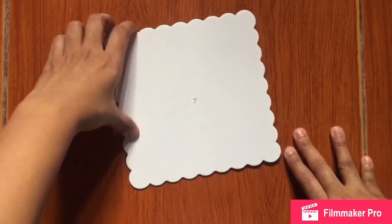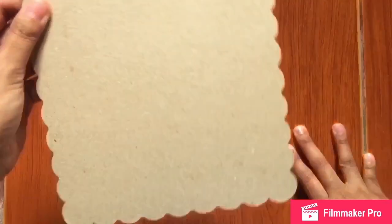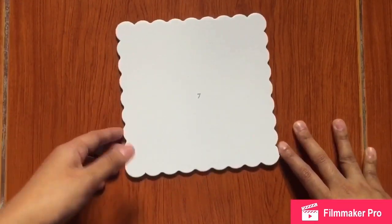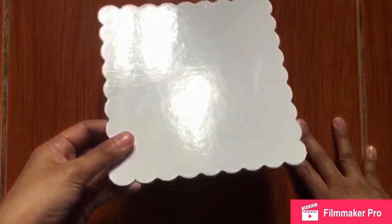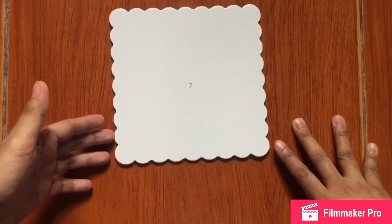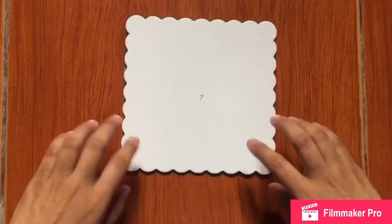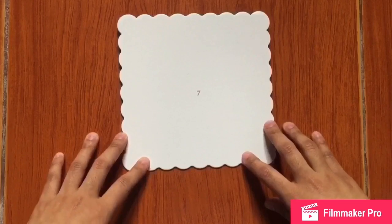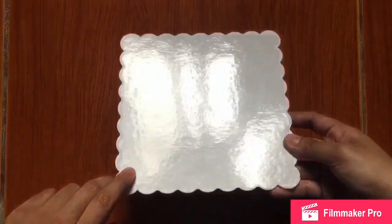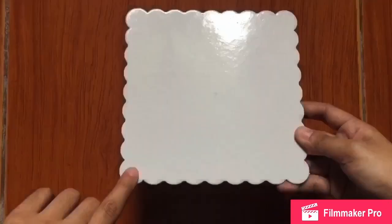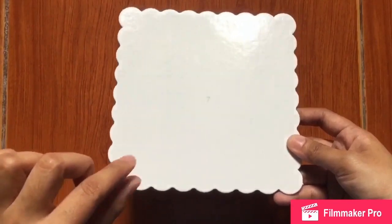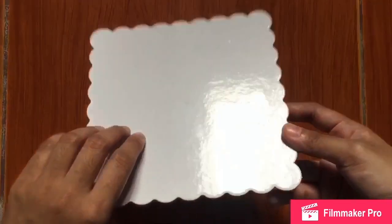I bought this in a local baking supply store and it does have some different colors and then shapes. The size of this is seven by seven. Okay, so if you can see it has gloss because the first layer is actually made from thin plastic, but this one is actually made from cardboard.